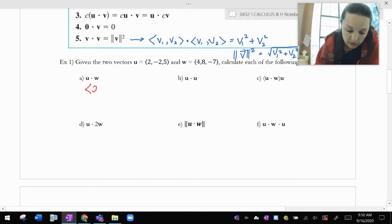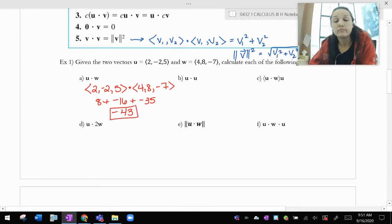So u dot w is 2, negative 2, 5 dotted with 4, 8, negative 7. And so 2 times 4 is 8. Negative 2 times 8 is negative 16. 5 times negative 7 is negative 35. So that's going to be a grand total, I think, of negative 43.